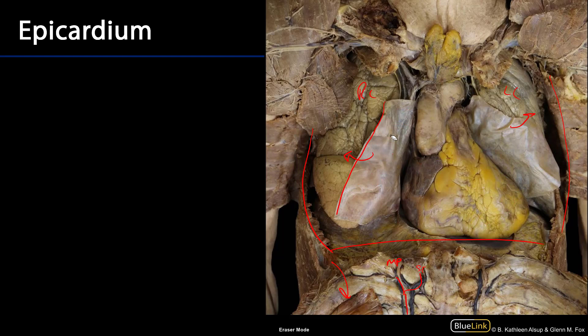Let's focus on that visceral layer of the serous pericardium, better known as the epicardium. The epicardium is going to take a nice shiny appearance to it — it's ciliated mesothelium, but we wouldn't be able to tell that from a gross perspective. We can see there are copious amounts of adipose connective tissue just deep to that epicardium, more so in association with the ventricles and some of the great vessels, such as the space between the ascending aorta and the pulmonary trunk, than with the atria.